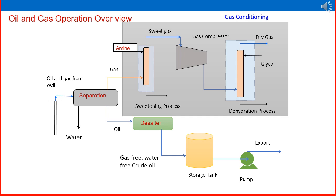Each step — desalter, storage tank, pump, compressor, and export to refinery — will be studied in detail in coming videos. The water separated from the crude oil mixture is introduced to further oil separation if available. The effluent water is then sent back to an injection well after chemical and bacterial treatment, so the water is not wasted and goes back to the reservoir to maintain reservoir pressure.